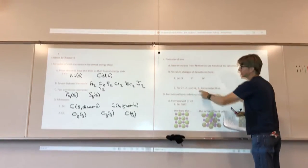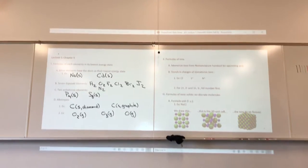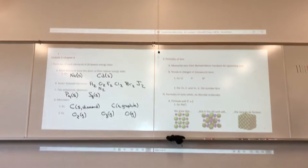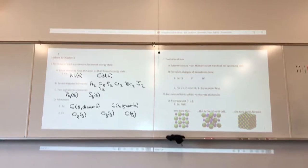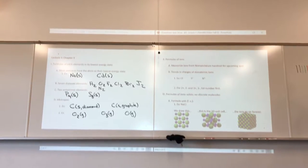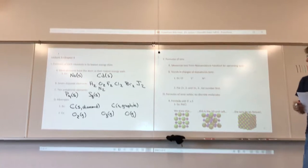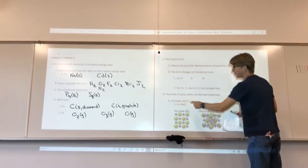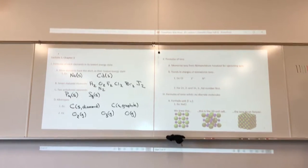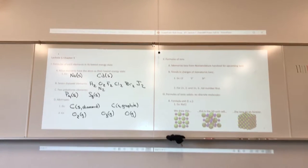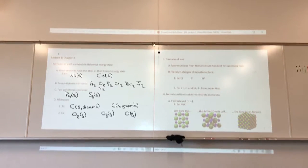Technically, when you list charges of plus two, minus two, etc., it's conventional to list the number and then the sign — 2+ rather than +2. I don't require it; if you write it as minus two, I won't penalize that. For formulas of ionic solids, there are no discrete molecules — that's why the term is 'formula unit' and not 'molecule.'